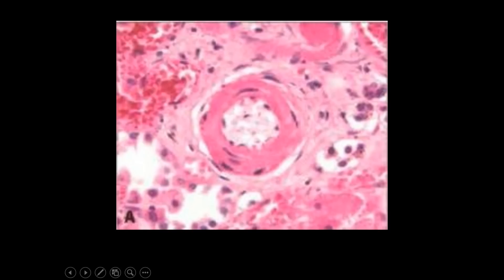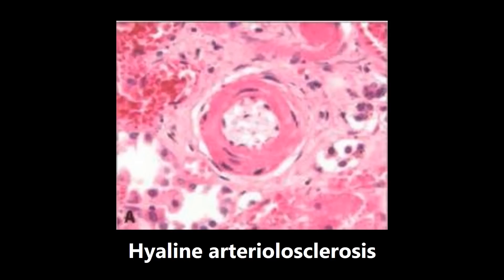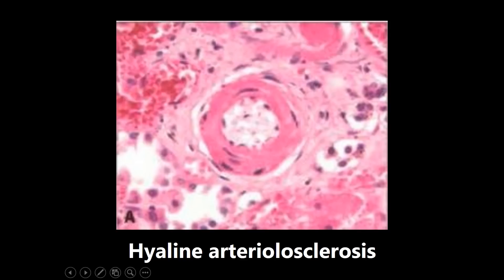This next image is an example of hyaline arteriolosclerosis. This thickening of the artery with all this hyaline material has two common causes: essential hypertension and diabetes mellitus. So if you have a patient with either of those conditions and they show you histology of a blood vessel with this appearance, definitely think hyaline arteriolosclerosis.